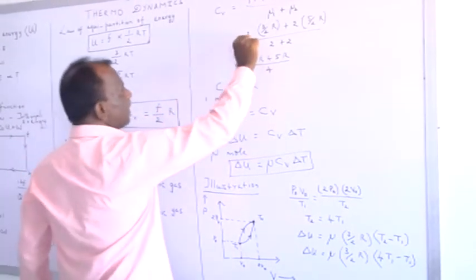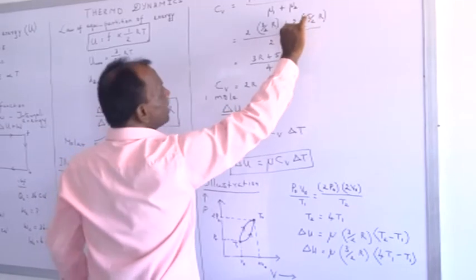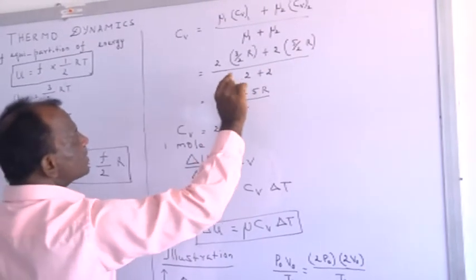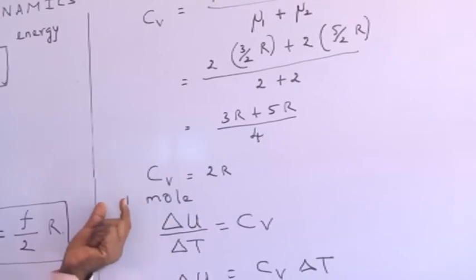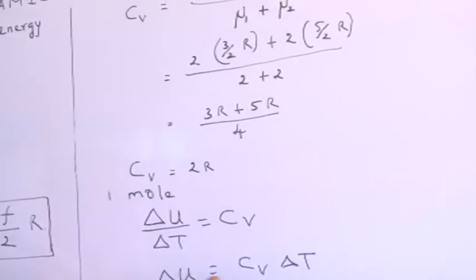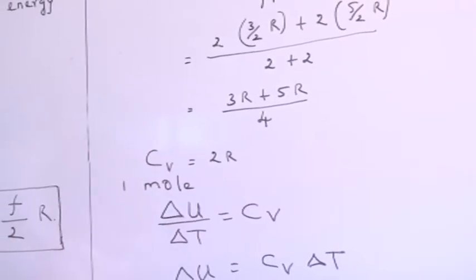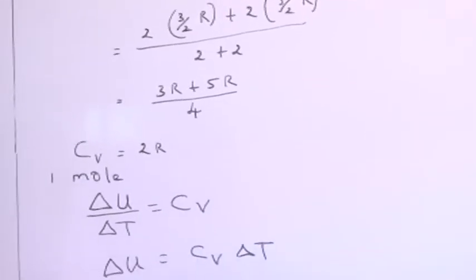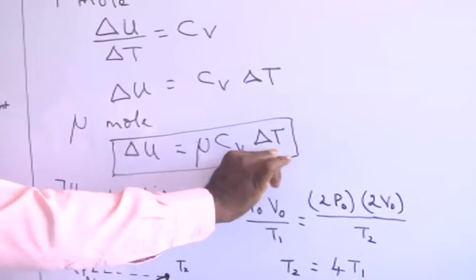For one mole of gas, we can write dU = Cv dT. For μ moles, the expression becomes ΔU = μ Cv ΔT. This is a very important formula for finding the change in internal energy given a change in temperature. As an illustration, consider a gas with initial state (P₀, V₀, T₁) and final state (2P₀, 2V₀, T₂). Applying the ideal gas equation to both states, we find T₂ = 4T₁. Using ΔU = μ Cv ΔT with Cv = (3/2)R for monoatomic gas, the change in internal energy is μ · (3/2)R · (4T₁ − T₁) = (9/2)μRT₁.